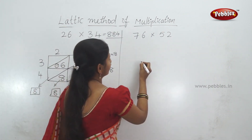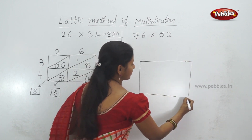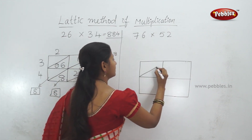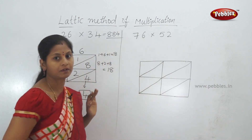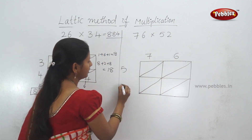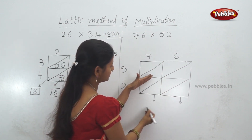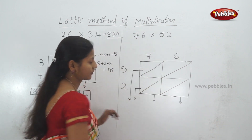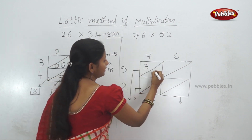76 times 52. First, draw a square or rectangle. Draw 4 boxes the same as before. The next number is 76 — digits 7 and 6 on top. Then 52 — digits 5 and 2 on the side. Now multiplication starts: 5 times 7 is 35, written as 3 and 5.